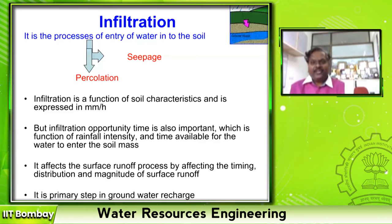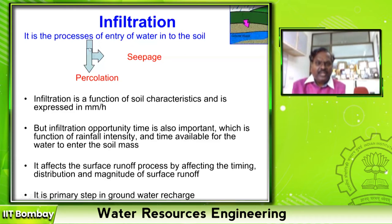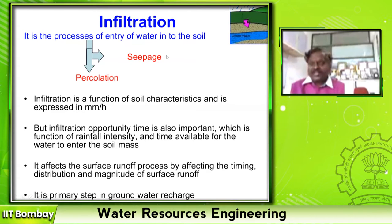You might have carried out in your second year the experiment on infiltration using the double ring infiltrometer. It is just the process of water entering into the soil. Once it enters into the ground, depending upon the geological condition, slope, and aquifer condition, water can move deep downwards — we call that percolation — or it may take horizontal movement — we call that seepage.